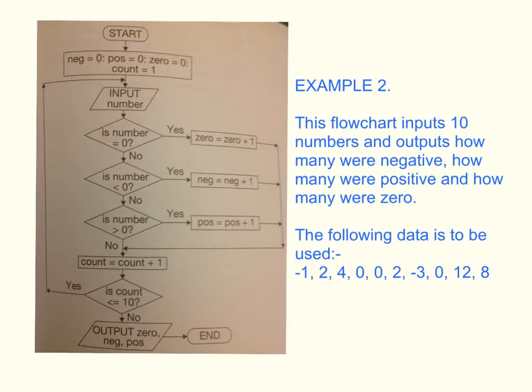So it gives you the following data here to be used. So we're going to use minus 1, 2, 4, 0, another 0, 2, minus 3, 0, 12, and 8. That is going to be our test data.